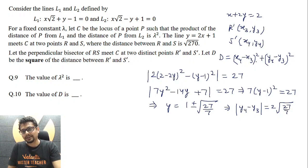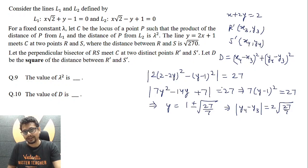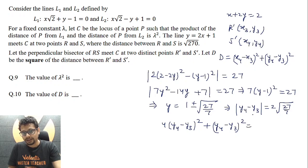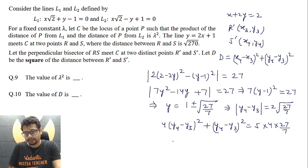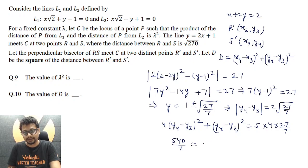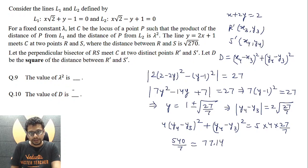From x + 2y = 2, we have x = 2 − 2y, so x₄ − x₃ = −2(y₄ − y₃), giving (x₄−x₃)² = 4(y₄−y₃)². Therefore d = (x₄−x₃)² + (y₄−y₃)² = 5(y₄−y₃)² = 5 × 4 × (27/7) = 540/7 ≈ 77.14. So the answer to Question 10 is 77.14.